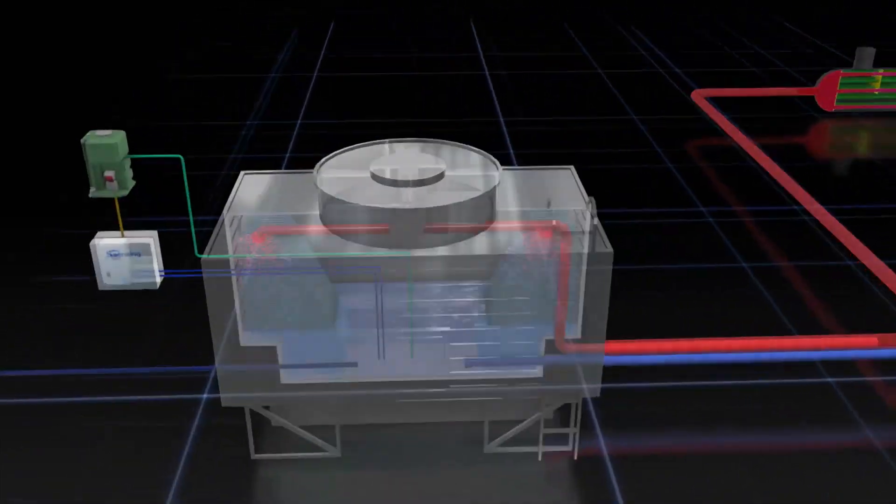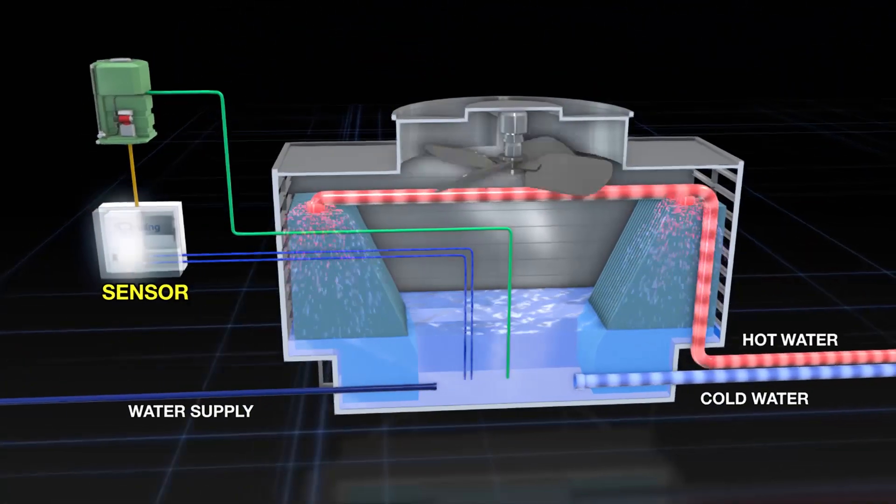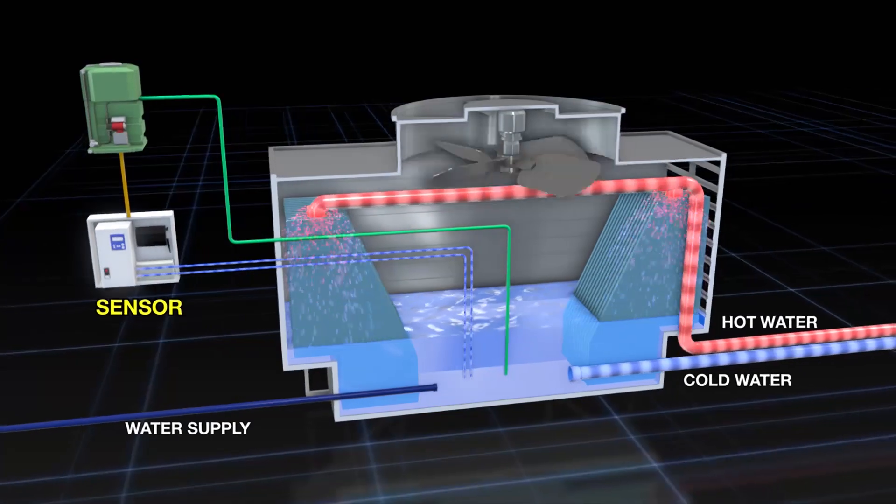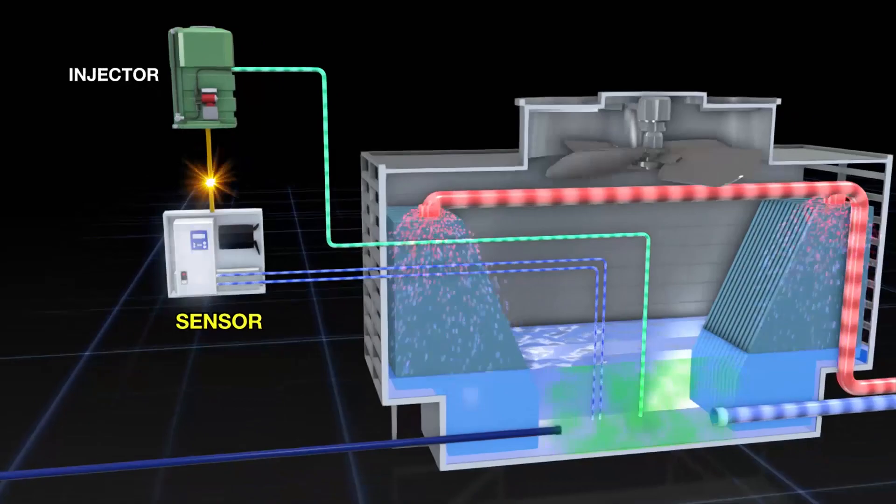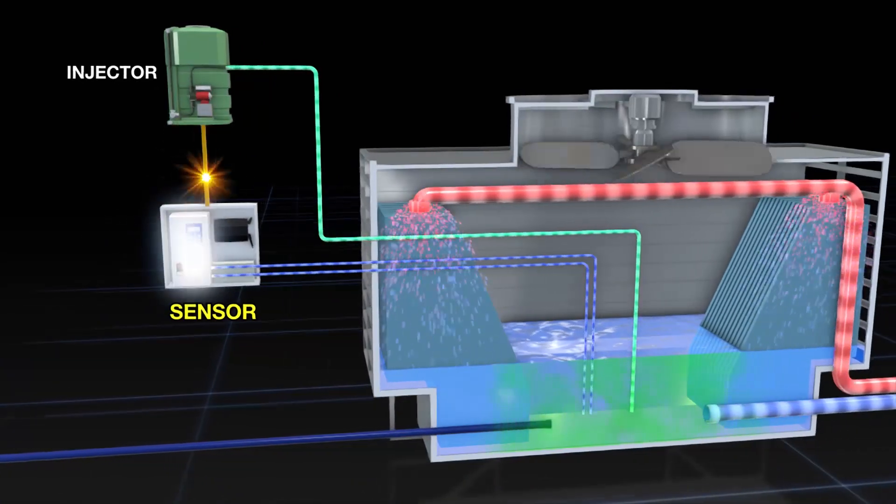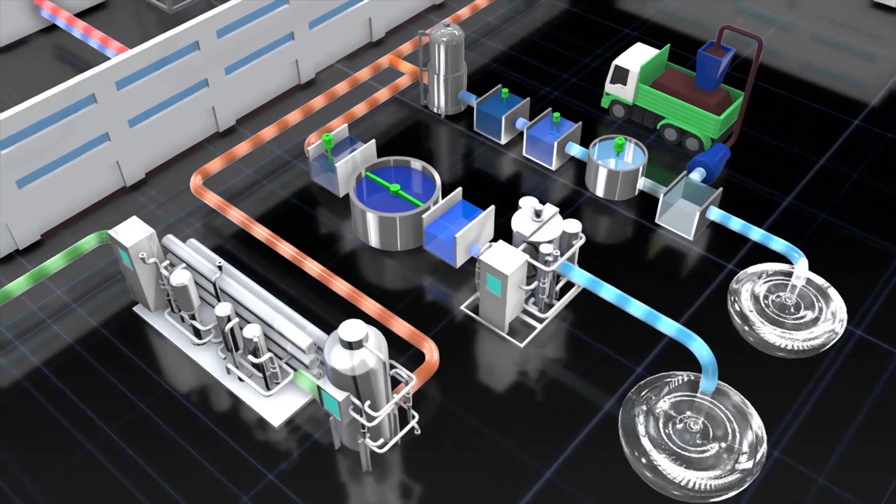An example is cooling water. Sensors installed in the cooling tower constantly measure fluctuations in the water quality. Based on this data, the system automatically controls the concentration of chemicals and water balance in real time.